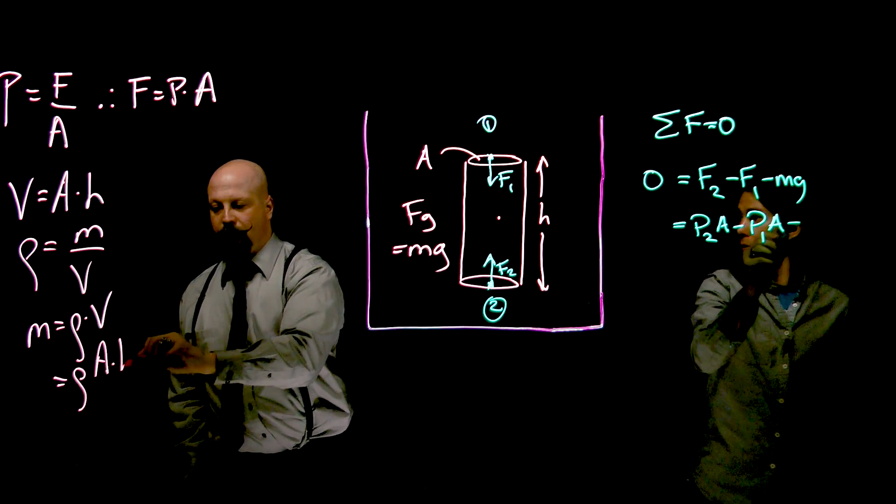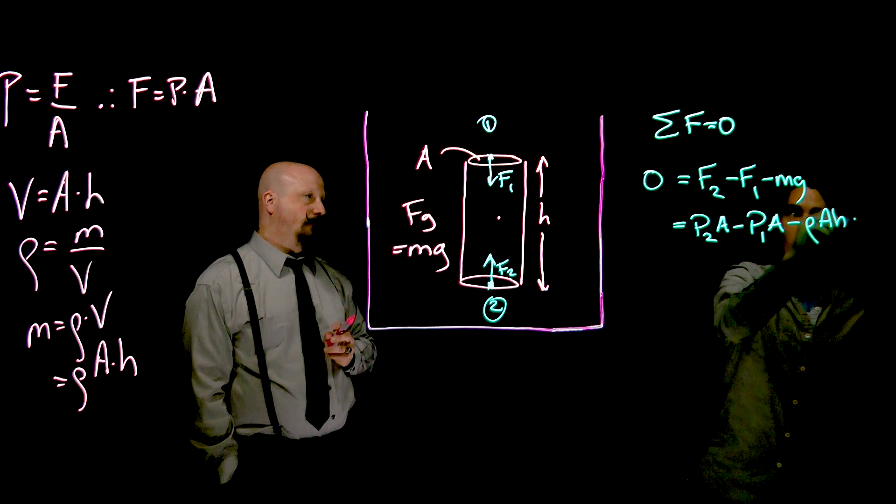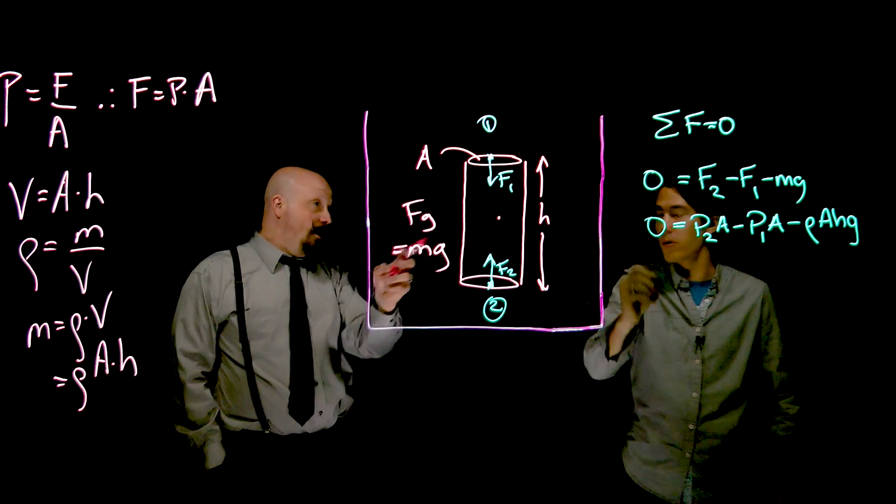And let's actually write the volume as A times h. So we go from mg to rho times the volume, which is A times h. And then let's not forget the g on the end. And those three forces are zero. It's equal to zero.